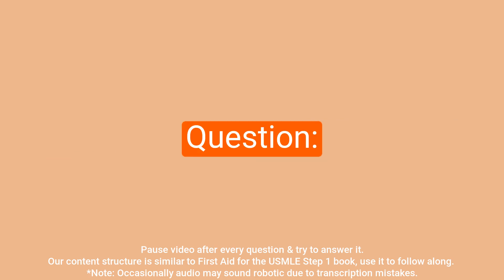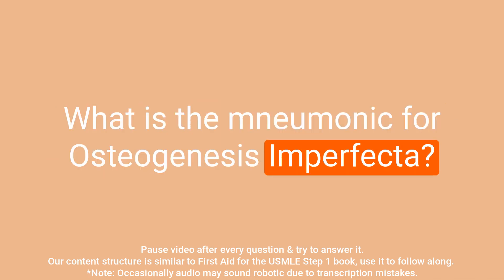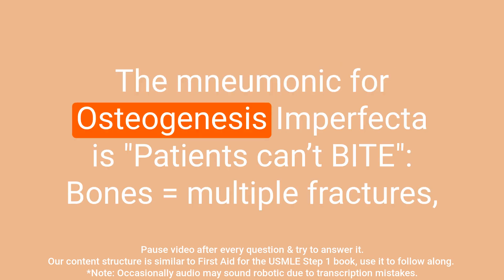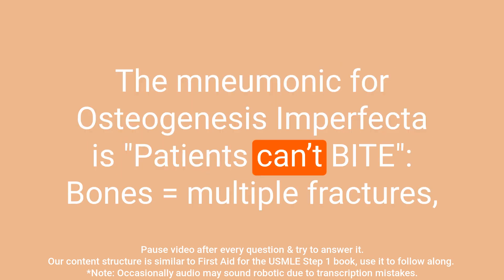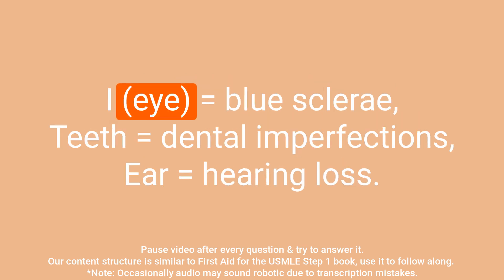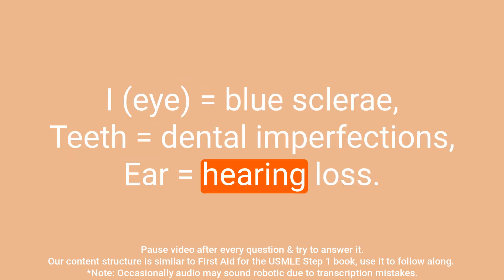Question: What is the mnemonic for osteogenesis imperfecta? Answer: The mnemonic is 'Patients Can BITE.' Bones equals multiple fractures. Eye equals blue sclera. Teeth equals dental imperfections. Ear equals hearing loss.